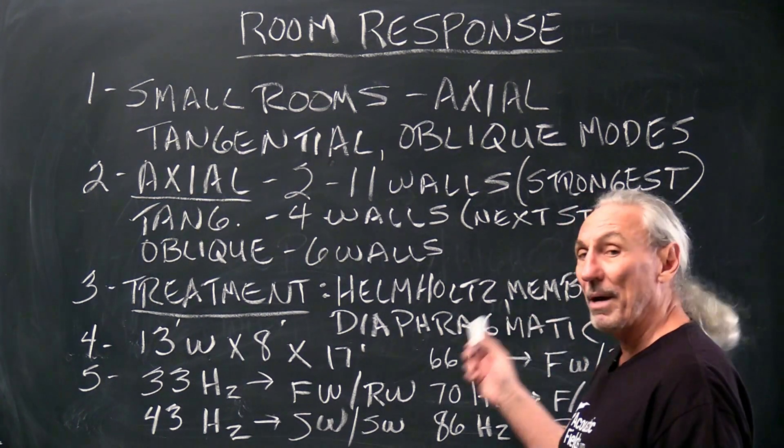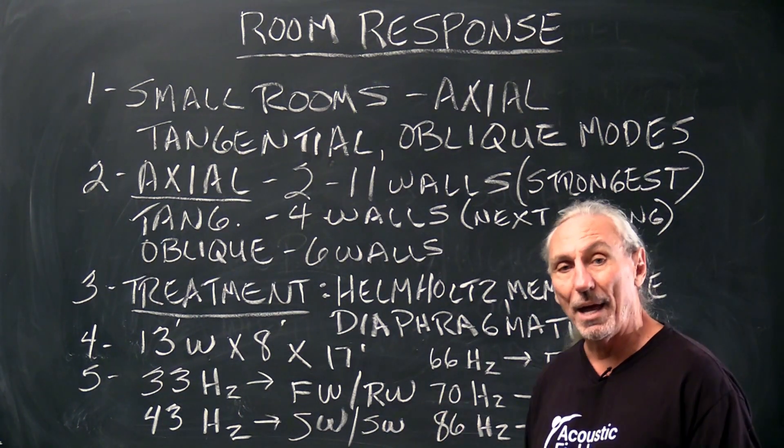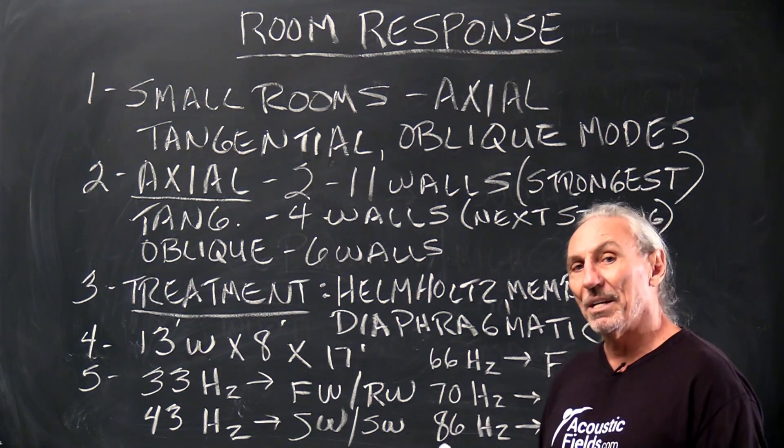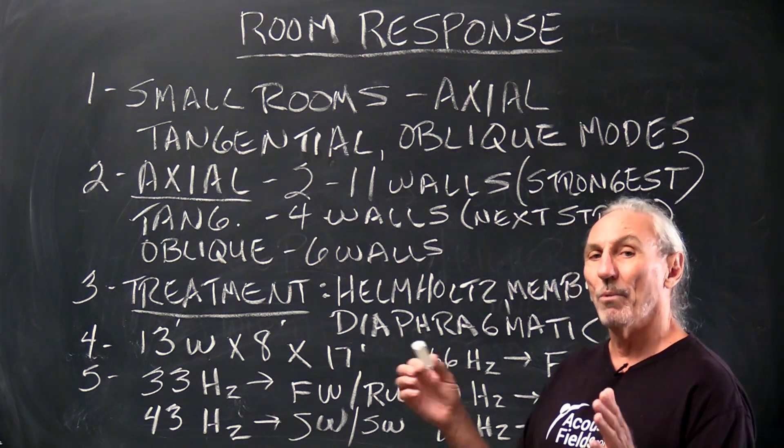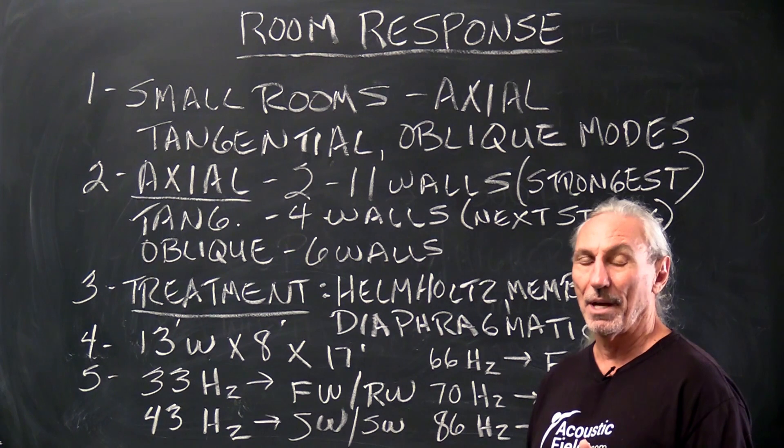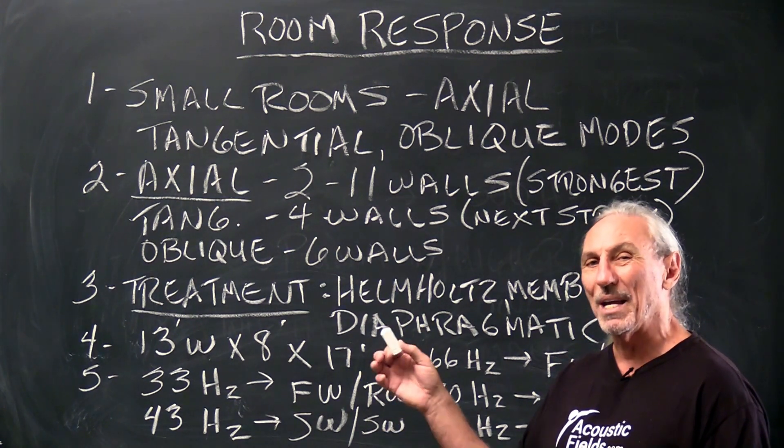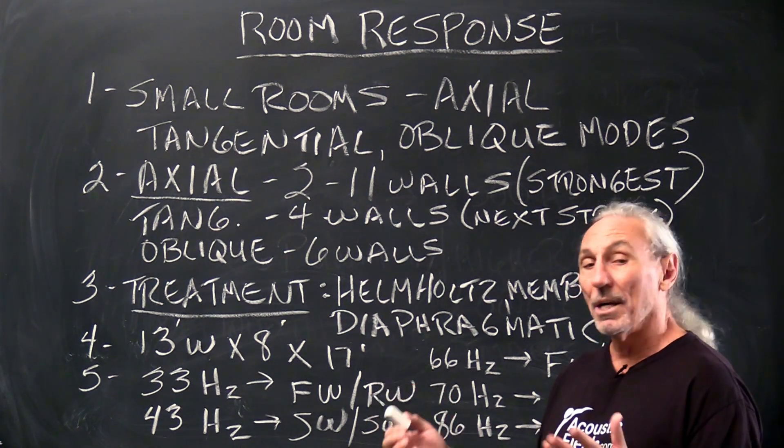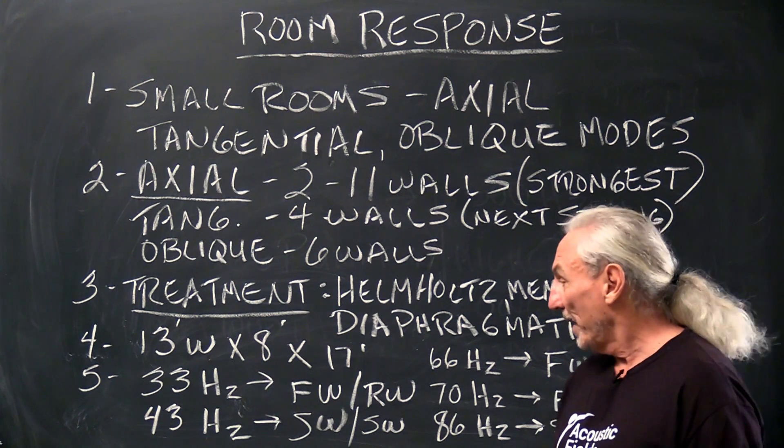So we have Helmholtz and then membrane is similar to diaphragmatic without the density and the rigidity. So once again, it has the same level of performance as diaphragmatic but not the rate. It doesn't get as much. It's also lighter weight.